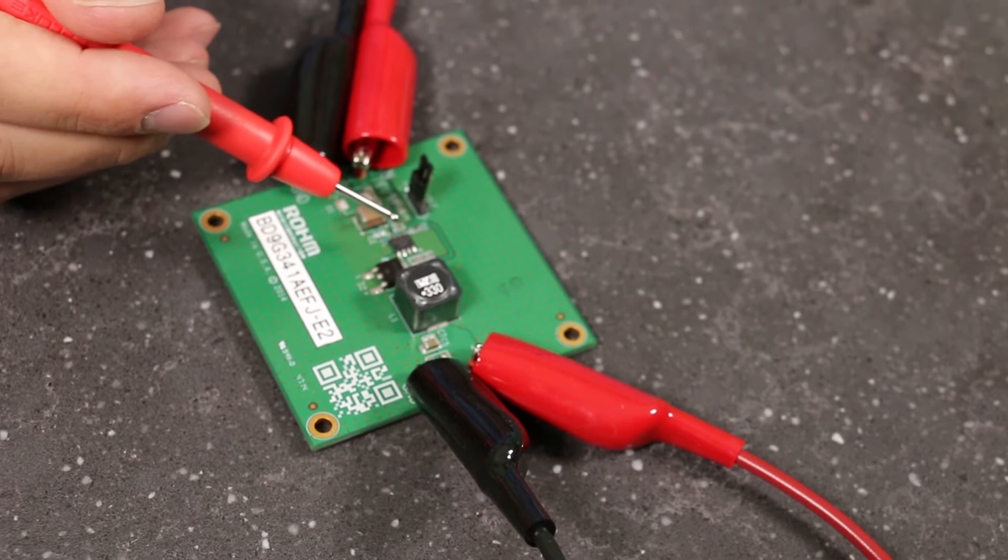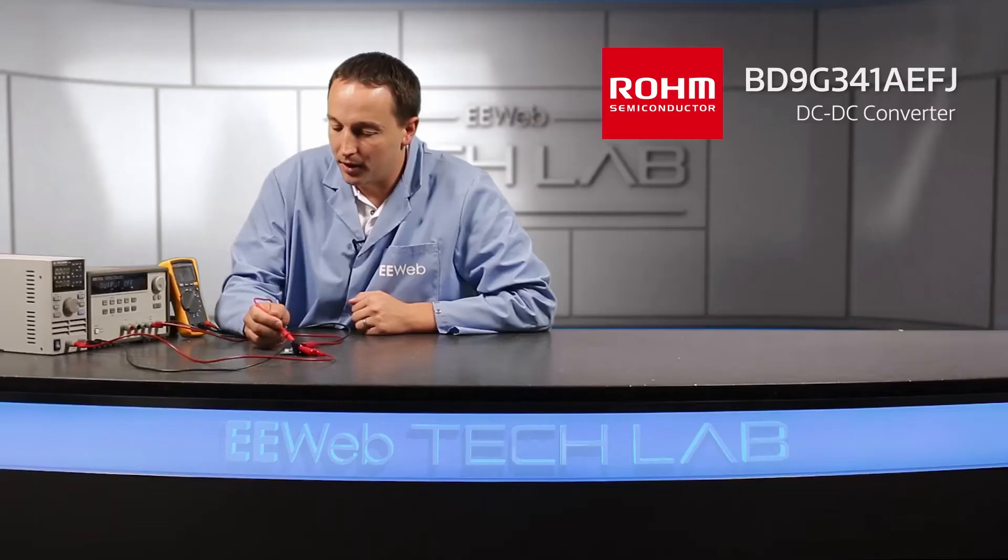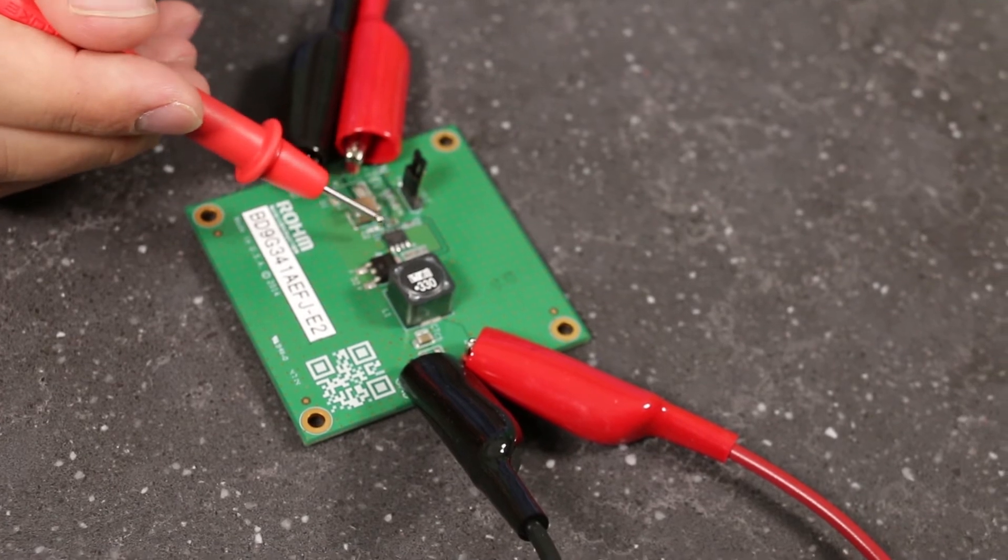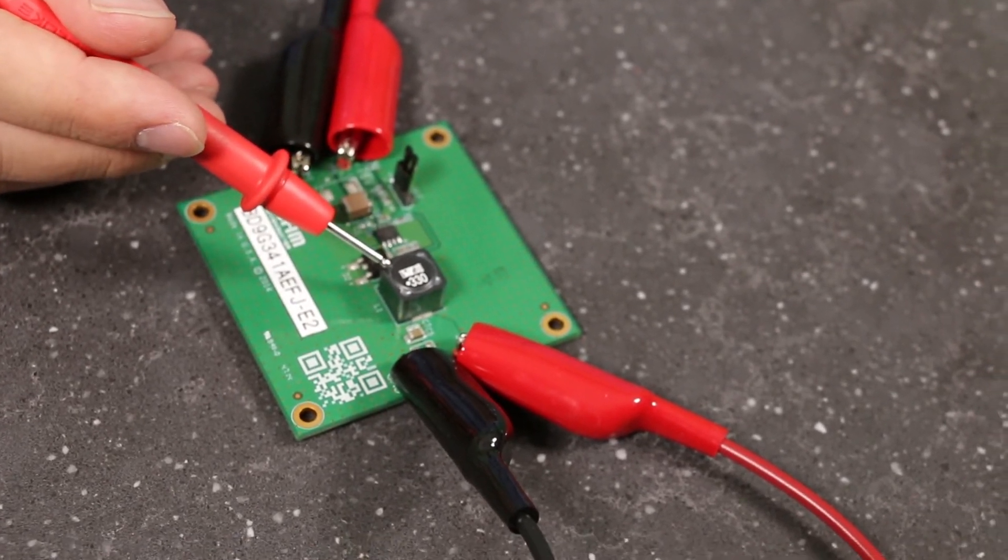This is a 47 kiloohm resistor which sets the clock to 200 kilohertz. If you decrease this resistor you increase the clock frequency which allows you to reduce this inductor, which then allows you to reduce the size of your implementation.